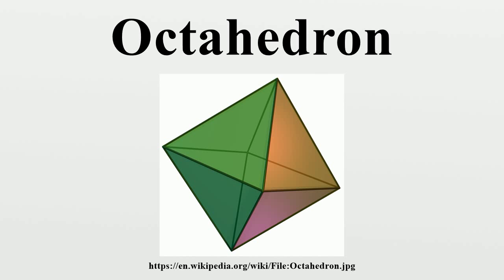Correspondingly, a regular octahedron is the result of cutting off from a regular tetrahedron four tetrahedra of half the linear size. The vertices of the octahedron lie at the midpoints of the edges of the tetrahedron, and in this sense it relates to the tetrahedron in the same way that the cuboctahedron and icosidodecahedron relate to the other platonic solids. One can also divide the edges of an octahedron in the ratio of the golden mean to define the vertices of an icosahedron.